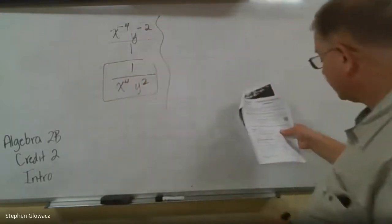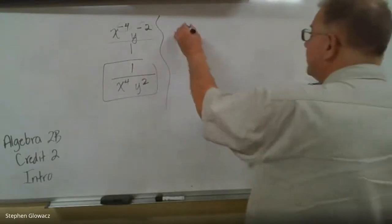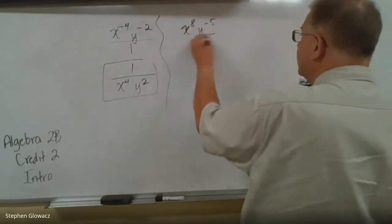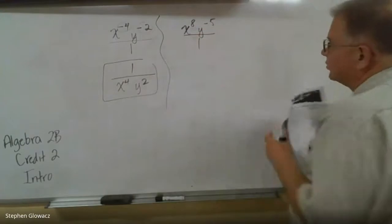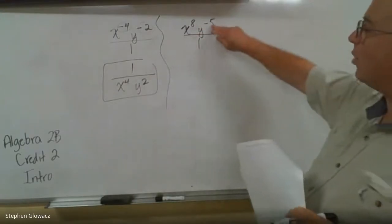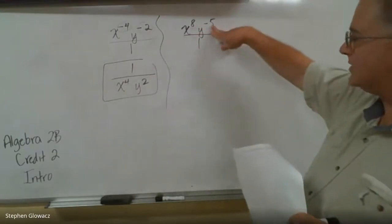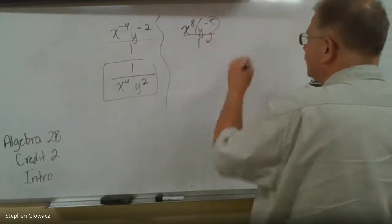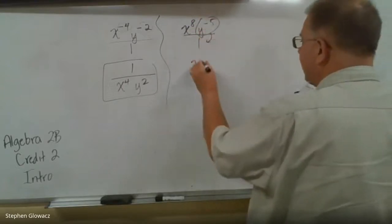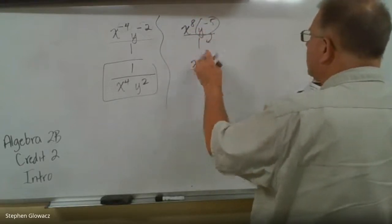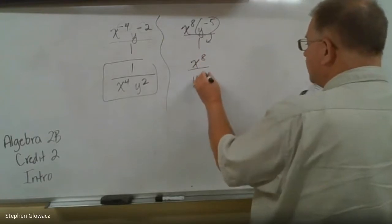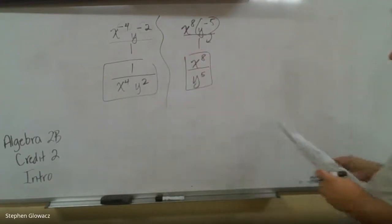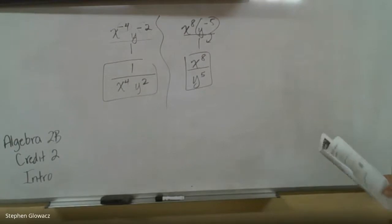Number 2: we have x to the 8th, y to the negative 5th. We put the expression over 1 again, but only the y has a negative exponent, so only the y drops into the denominator. The x to the 8th stays on top. So we get x to the 8th over y to the positive 5th.